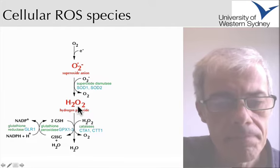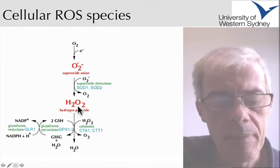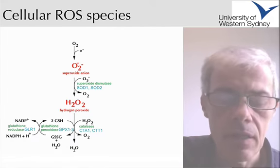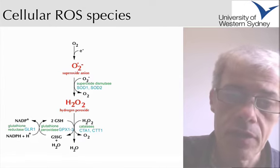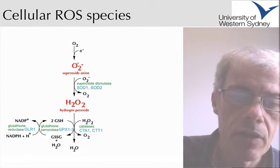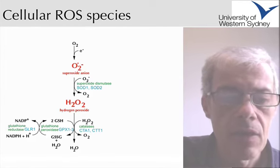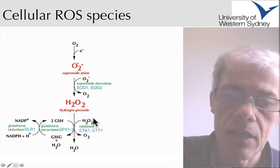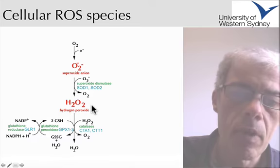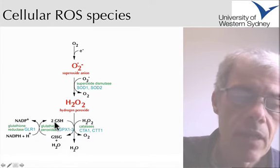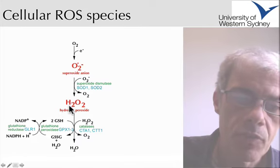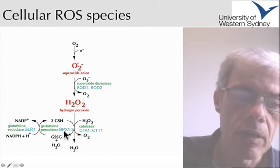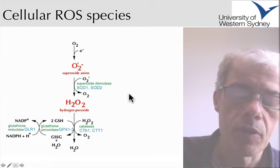Hydrogen peroxide can then go on to damage proteins — particularly cysteine residues are susceptible to hydrogen peroxide oxidation — and there are mechanisms within the cell to try and protect proteins from hydrogen peroxide damage. Namely, we have glutathione that can pick up the hydrogen peroxide, and it will be oxidized to protect proteins within the cell.